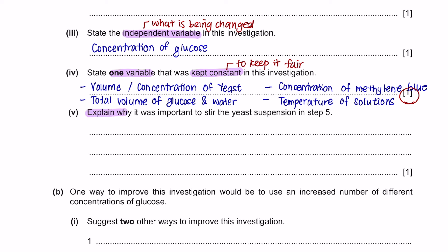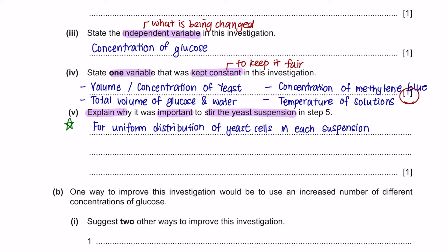Part 5: Explain why it was important to stir the yeast suspension in step 5. This question can be answered with some logical thinking — like when making a protein shake, you stir or shake the bottle to ensure even distribution with no clumps. The same idea applies here: stirring is important for uniform distribution of yeast cells in each suspension.